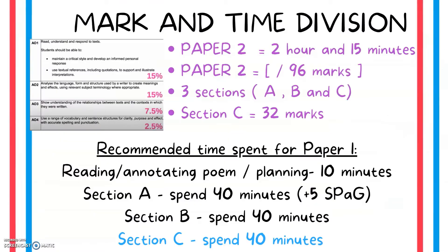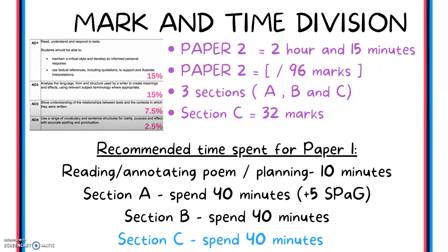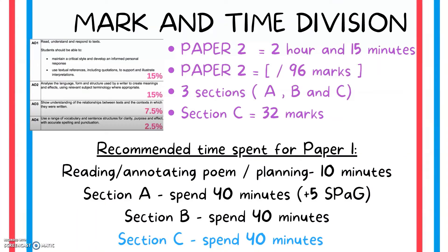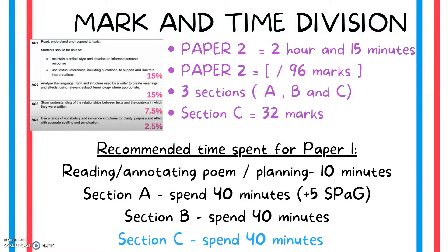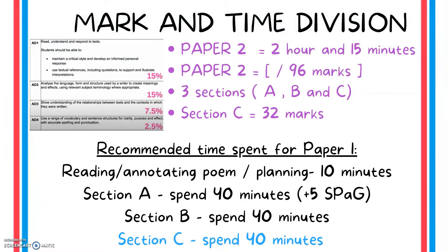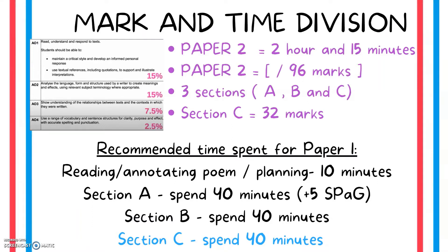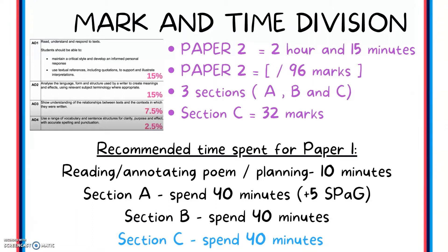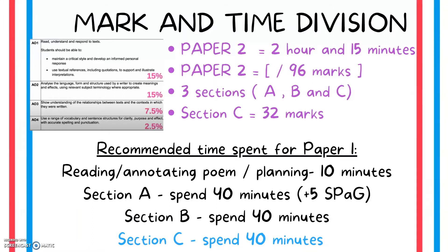Let's look at the mark and time division. For the whole of Paper 2, you have 2 hours and 15 minutes, and it's out of 96 marks. There are three sections: A, B, and C, and Section C is out of 32 marks. For reading and annotating the poem and planning, I would suggest 10 minutes. For Section A, 40 minutes plus 5 minutes for AO4. For Section B, 40 minutes, and for Section C, 40 minutes.